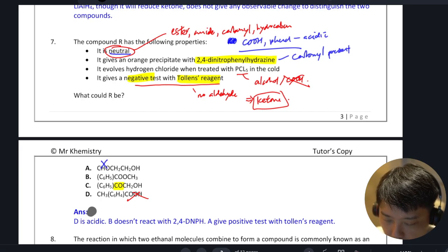Ester is okay, so B is fine. Is there alcohol? Sorry, B does not have a ketone. So B is also out because B is just an ester.